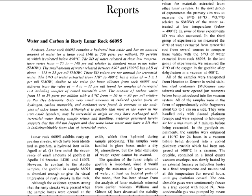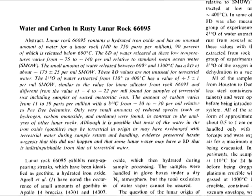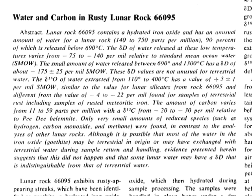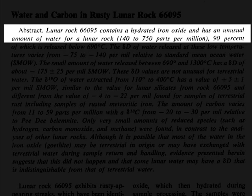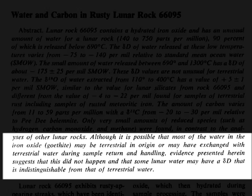Friedman and his team also reported on these hydrous minerals — the same guys who wrote that fascinating report that Webb cited, which demonstrates just how vast his knowledge of his own sources is. In their 1974 science article, Friedman and his team do not rule out the possibility of contamination, but they do consider it the least likely cause. Their paper states: 'Although it is possible that most of the water in the iron oxide may be terrestrial in origin, or may have exchanged with terrestrial water during sample return and handling, evidence presented herein suggests that this did not happen, and that some lunar water may have a deuterium that is indistinguishable from that of terrestrial water.'